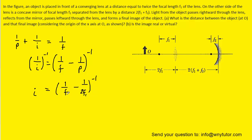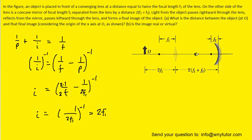We put a subscript of 1 on the focal length since we're looking at the first lens. To solve for I, we find a common denominator by multiplying the denominator and numerator by 2, giving us 2 minus 1 in the numerator, which simplifies to 1. So we're left with 1/(2F1), and when we reciprocate that we get 2F1. The initial image is located at a distance of 2F1. Since this is positive, the image is formed on the right side of the lens, and we can mark that distance as 2F1.